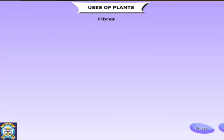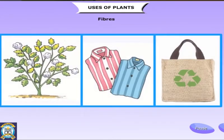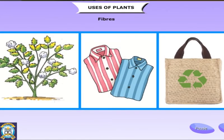Fibers from various plants are used in daily life, the most common being cotton. The fiber from the flax plant is made into linen. Jute, hemp and sisal plants provide coarse fiber that is used to make ropes, bags and so on. Coir from the coconut shell is used for making doormats, carpets and other items.